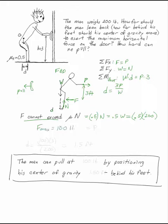F is equal to P, so this is my P. That's as hard as he can pull. I want to plug that into d to get 1.5 feet. Now I can answer the question. The man can pull at 100 pounds by positioning his center of gravity 1.5 feet behind his feet.